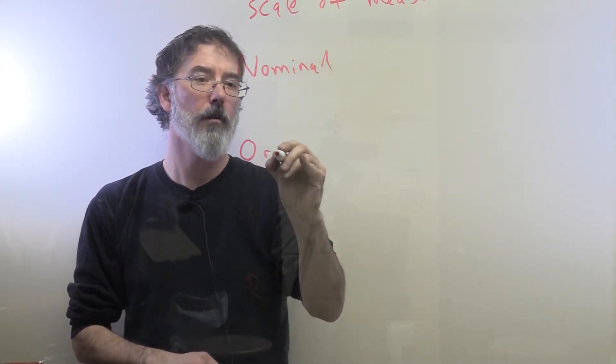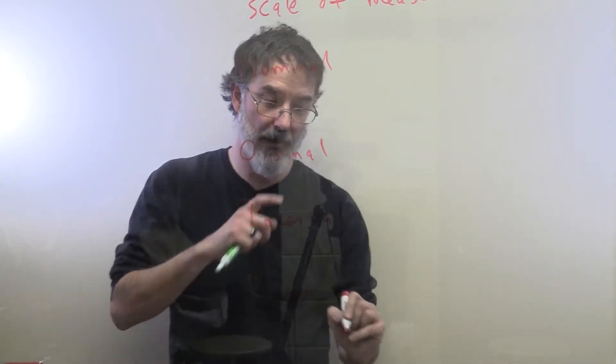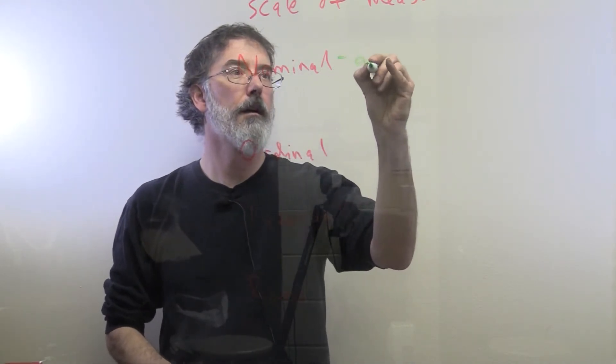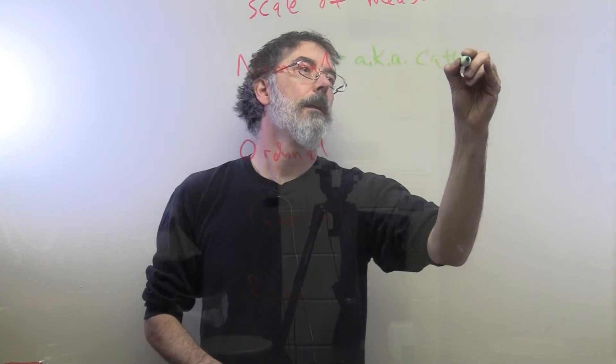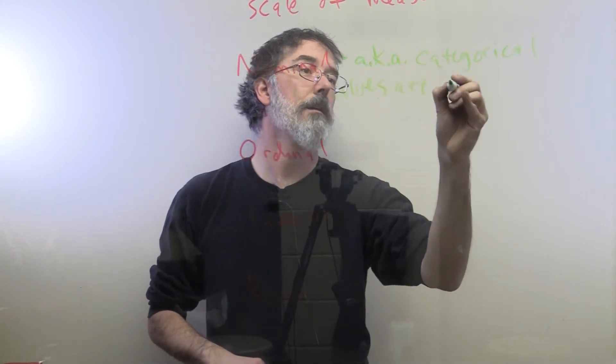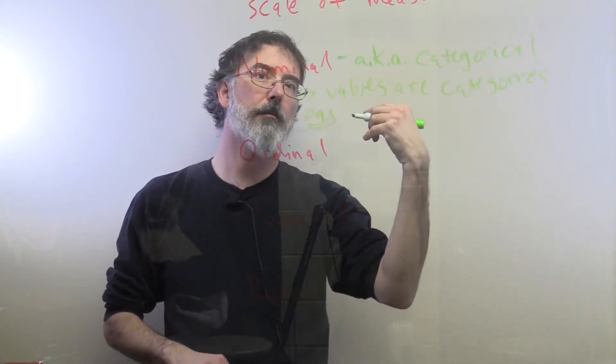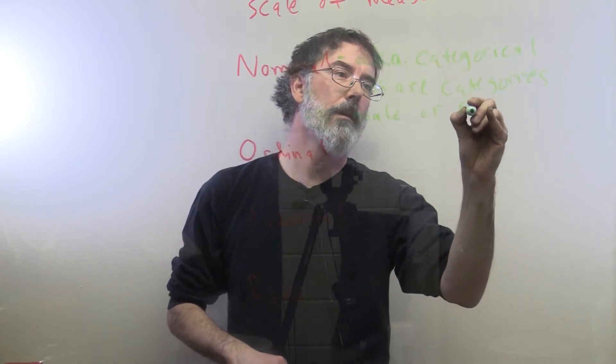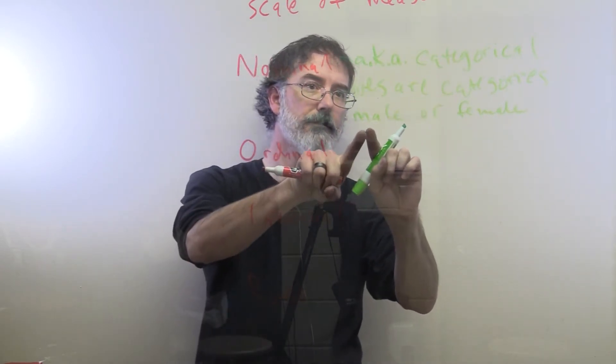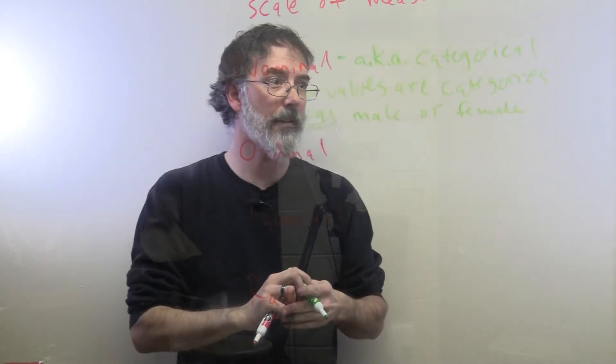It is going to be nominal, ordinal, interval, or ratio. Nominal variables are also known as categorical. Here, values are categories. For example, for the variable of biological sex, you could be male or female. So those are the values for the variable of sex. This is nominal, so you are one or the other. One is not bigger, or more, or less, or anything like that. They are just different.